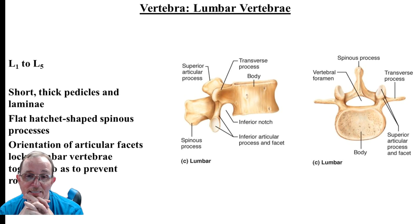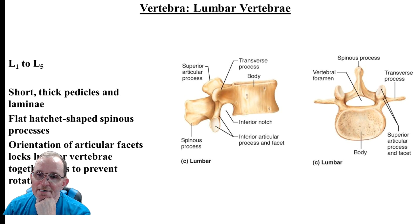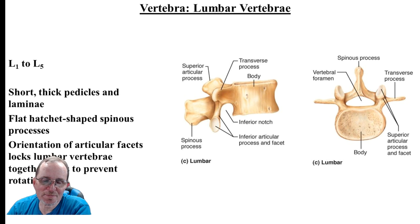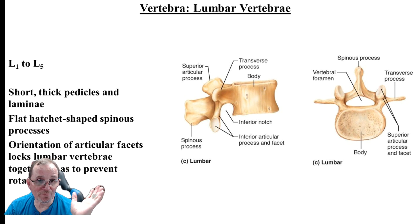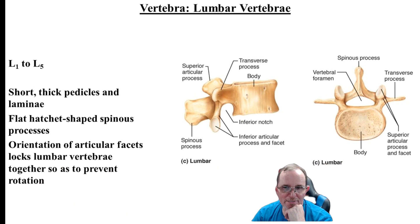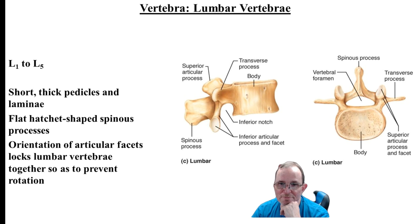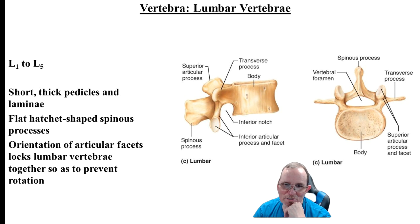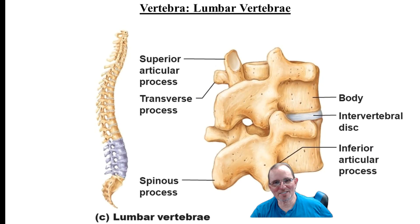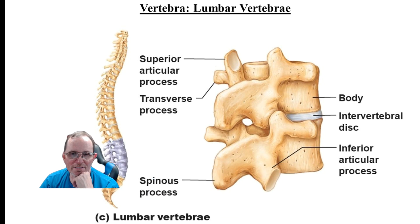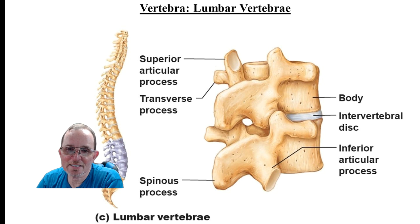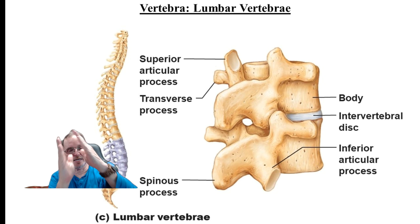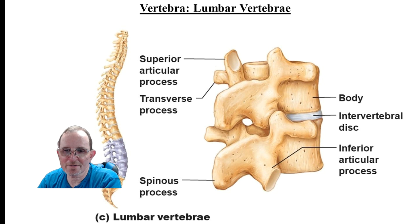The lumbar vertebrae are at the bottom and are big and chunky. They have a large body, spinous process, and transverse processes. The spinous process is not sharp and pointed like in the cervical or thoracic — it's short and blunt. They have short, thick pedicles — flat hatchet-shaped. These guys are not intended to give us flexibility; if you try, you'll have problems. Their superior and inferior articular processes are oriented to kind of lock them in place.